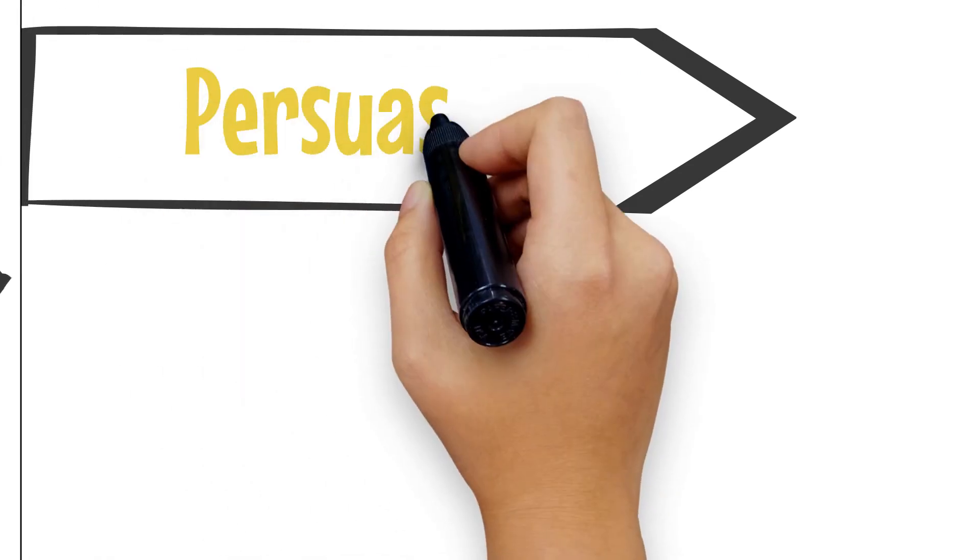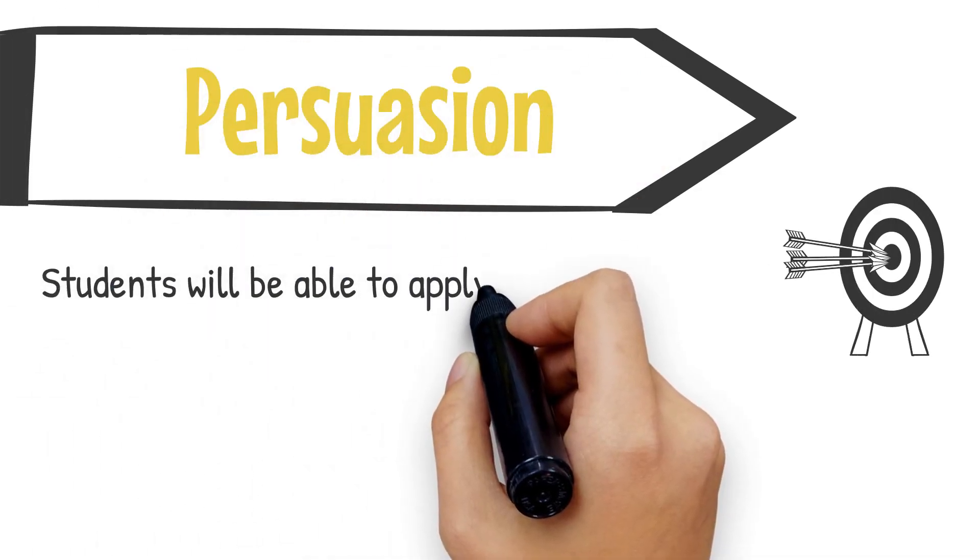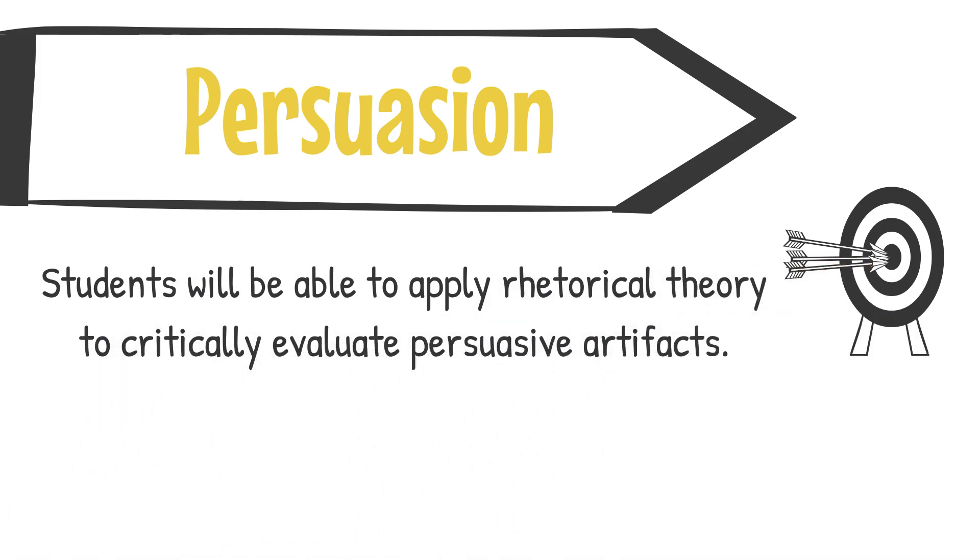For example, a learning outcome for a course in persuasion might be written as such: Students will be able to apply rhetorical theory to critically evaluate persuasive artifacts. The instructor might have a secondary goal of helping students develop their writing skills.